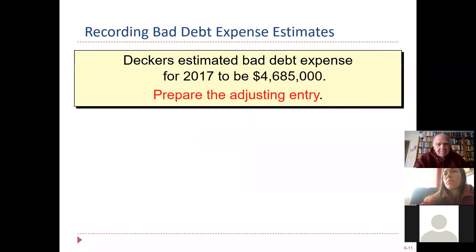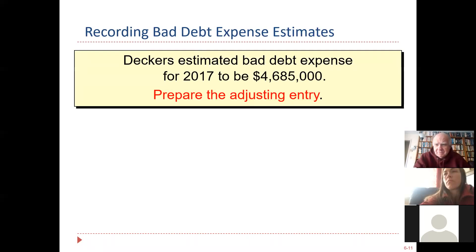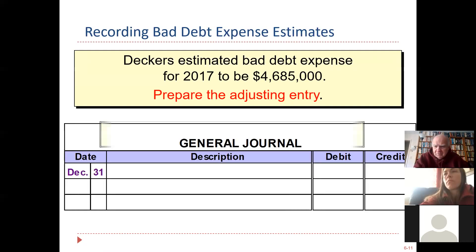Let's start by not having to figure out the number — we're given it. Decker's Shoes looked at their receivables and said they think $4,685,000 will never come from customers. At this point, they don't know who specifically. This is $4,685,000 on their aging, but they have to estimate how much these customers are going to stiff them in the future.